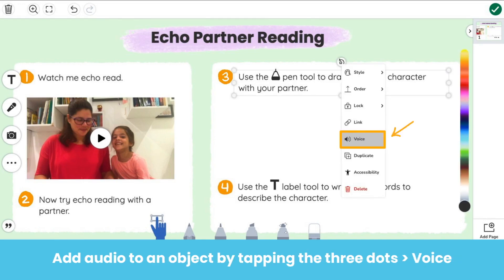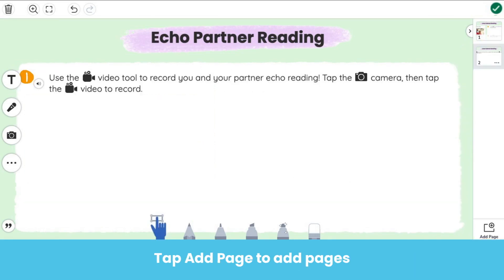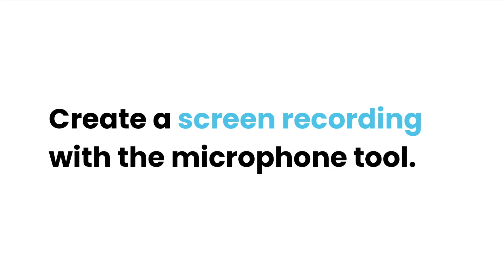You can also add audio recordings to any object — tap the three dots, then audio. You might read text aloud or explain a photo. Seesaw for Schools users can create multi-page templates, which means even more room for learning. You might add your video to page one, then tap Add Page to add additional pages. Here we use page two to give students more space to show their learning. Sometimes you may want to show a screen recording of how to complete a certain part of the activity — use the microphone.